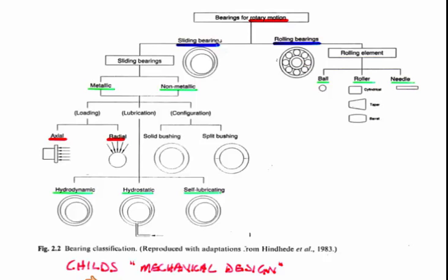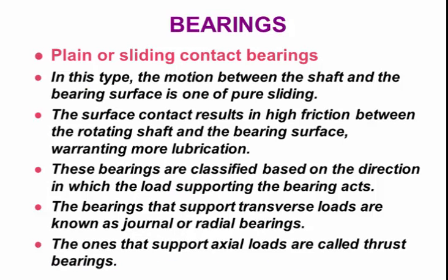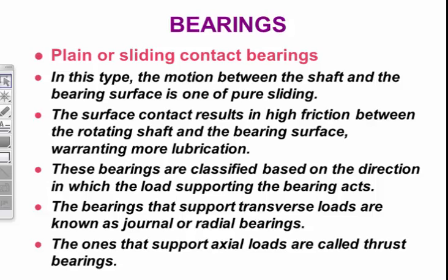In a plane bearing, the motion between the shaft and the bearing surface is one of pure sliding — the two surfaces slide past each other. Think of a block put on top of a table and pushed along: that's a plane bearing. Without lubrication, the block gets hot very quickly and ends up burning the table. If the surfaces touch, the roughness on the shafts forms micro-welds, effectively welding the shaft together.